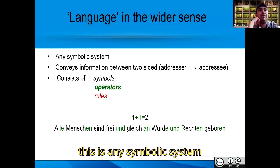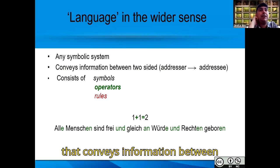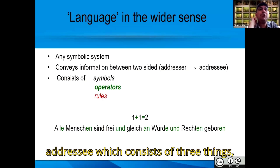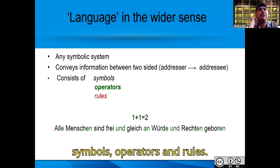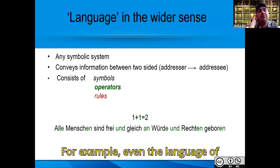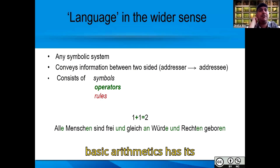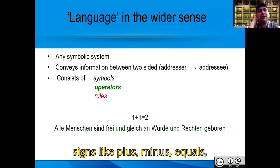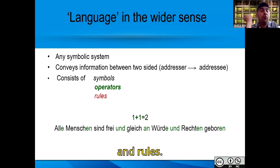we can say that this is any symbolic system that conveys information between two sides, an addresser and addressee, which consists of three things: symbols, operators and rules. For example, even the language of basic arithmetic has its symbols, which can be the prime numbers, operators such as signs like plus, minus, equals to, and rules.